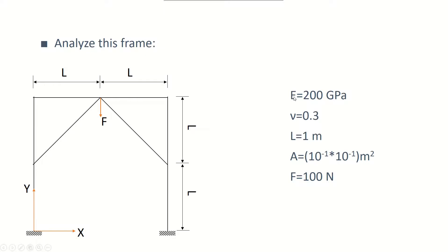The properties are given here. Young's modulus is 200 gigapascals. Poisson ratio is 0.3. Each of these Ls is 1 meter, which means that this element is at 45 degrees with respect to the global coordinate system, and this one is at 135 degrees. The cross-sectional area of the beam is 2 meters squared, and the force applied to this joint in the negative y direction is 100 newtons.